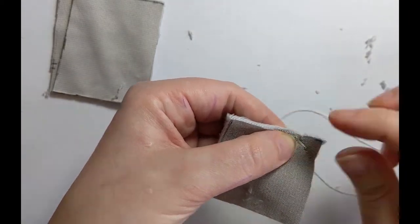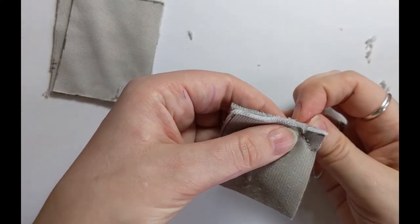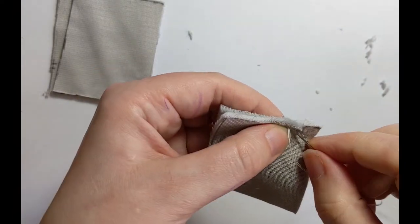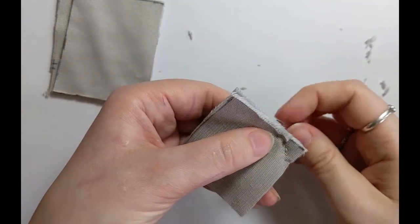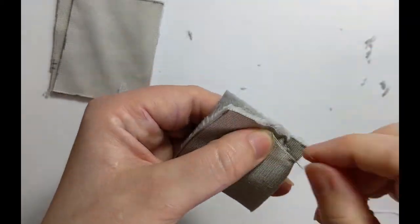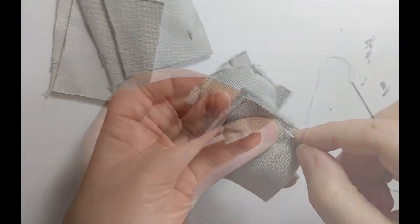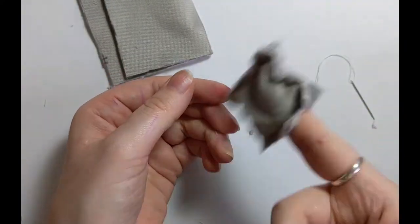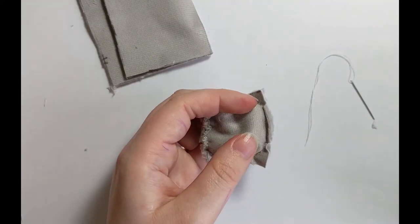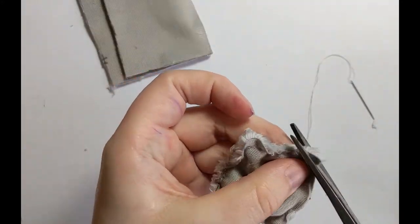I'm using a backstitch, just regular thread, nothing fancy, and that just goes all the way around, softening those curves around the corners and stitching on three sides. There you go, I just need to clip off those corners there.